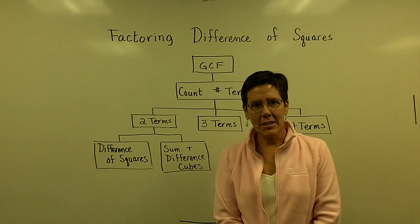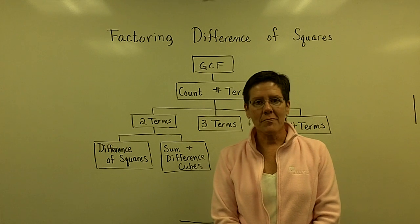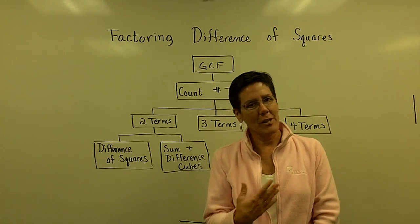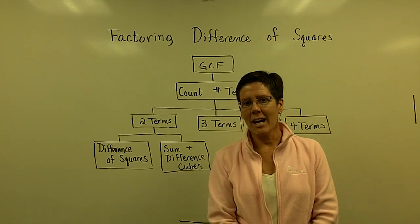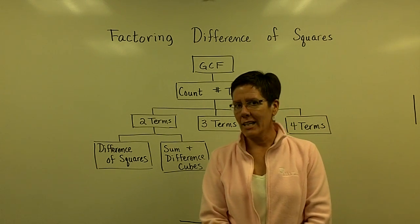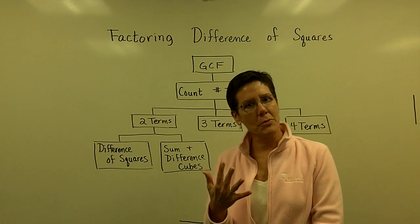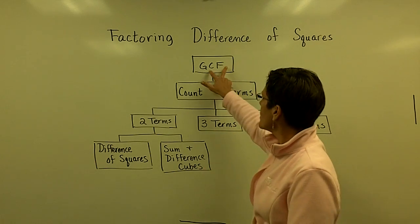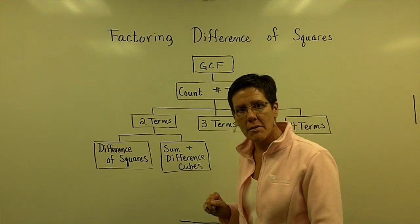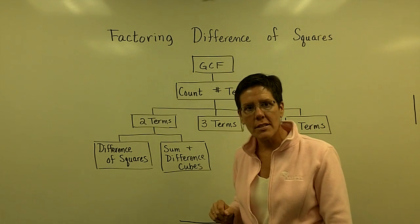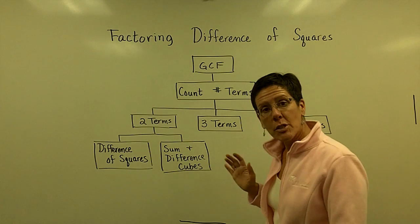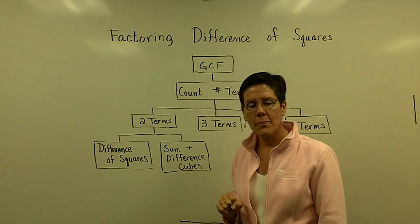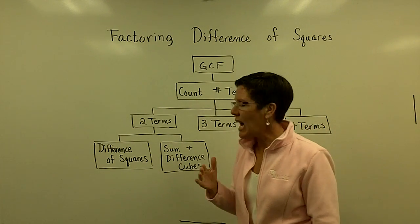Let's continue our study of factoring. Remember my flowchart — I put it up every time at the very beginning because I want to drill it in that you should always look for the greatest common factor first. Then when you factor polynomials, you should count the number of terms.